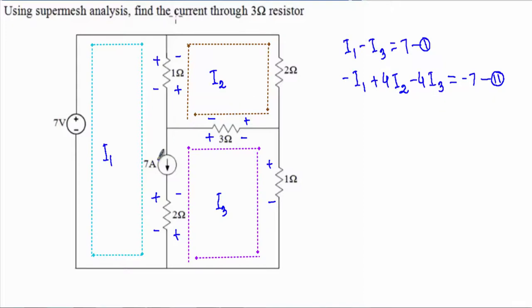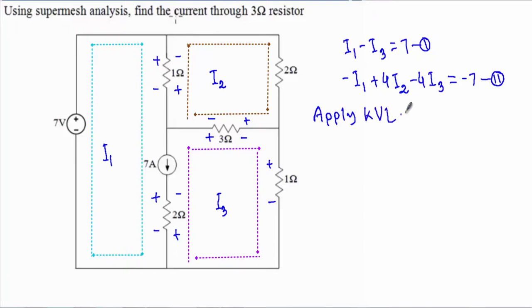So far I have two equations: one from KCL at the super mesh terminal and one from KVL around the super mesh. I need to solve for 3 loop currents, so I need a third equation. We are left with mesh 2, which was outside the super mesh, so I will now apply normal KVL to mesh 2.